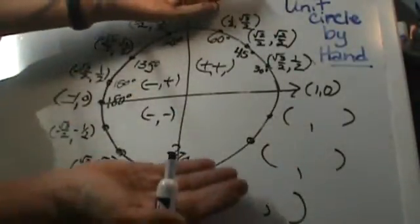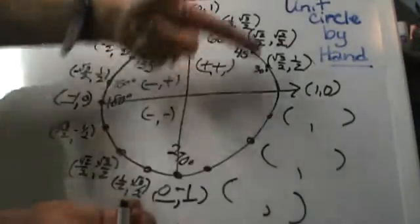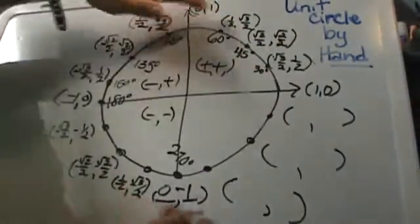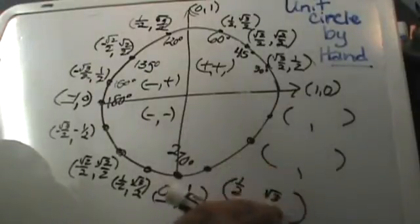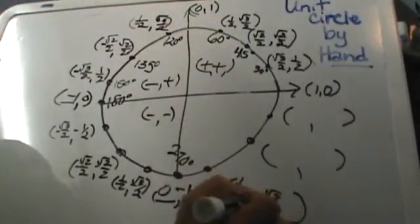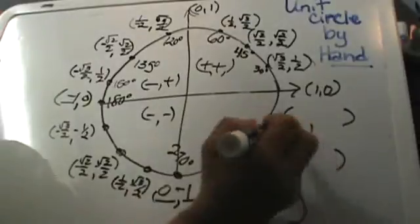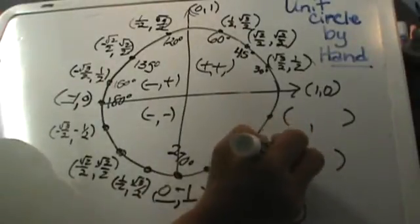Okay and again this mirror image of folding along the x axis, I'm going to take these values and just match them up. So this one is 1 half, square root of 3 over 2. This one is coming down here, square root of 2 over 2, square root of 2 over 2.